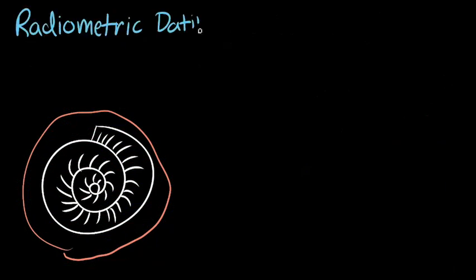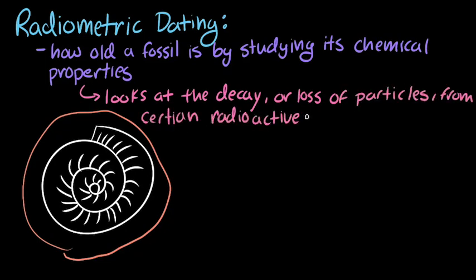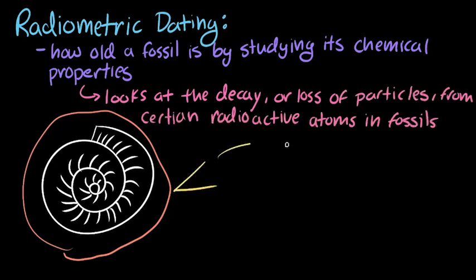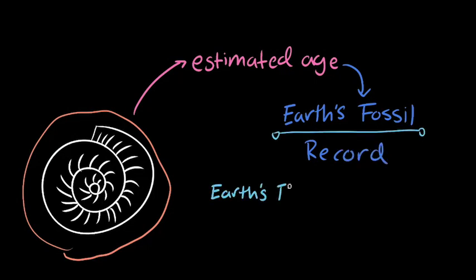The second way scientists estimate a fossil's age is through a process known as radiometric dating. Radiometric dating tells us how old a fossil is by studying its chemical properties. Specifically, radiometric dating looks at the decay, or the loss of particles, from certain radioactive atoms in the fossils. Scientists know how fast this decay happens, so by measuring the amount of decay that has occurred, scientists can estimate the age of the fossil. Once scientists know how old the fossil is, it can then be added to Earth's fossil record.